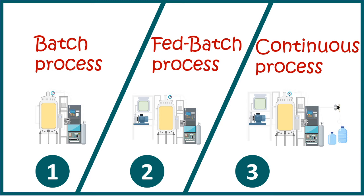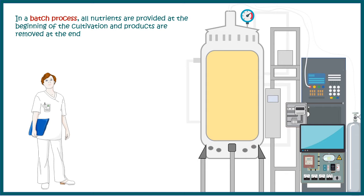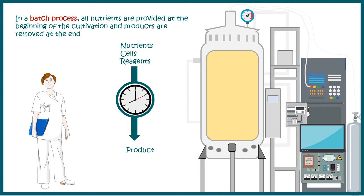In the batch process, all nutrients, media, and cells are provided in the beginning, and at the end of the run you collect the product in crude form. Later on, the crude product is taken for downstream processing. So it's fairly simple — give all the reagents necessary for the bioreaction, wait for the incubation time, and obtain the crude product. This is known as the batch process.